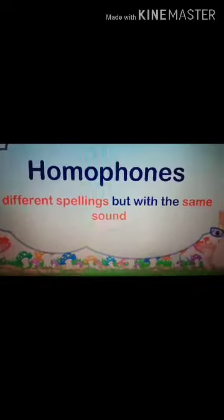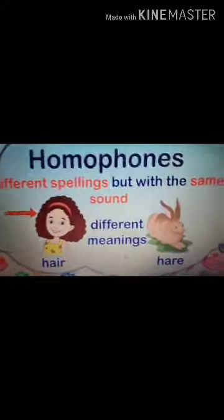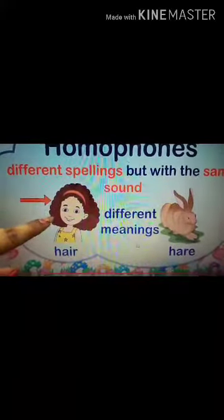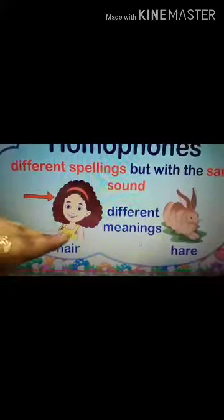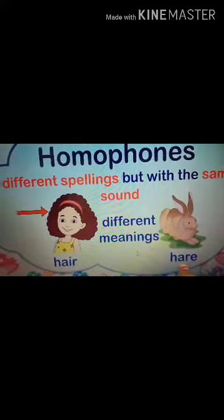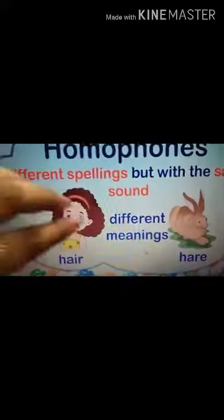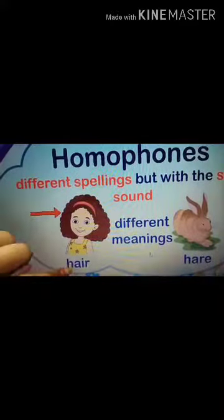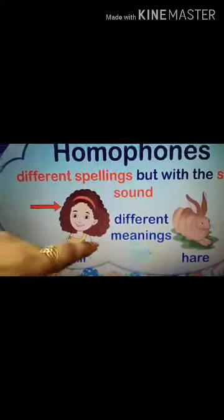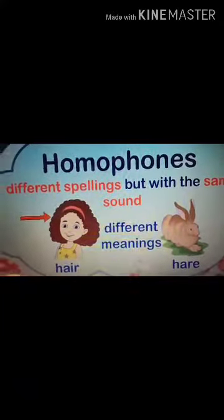Sometimes spellings are also the same, but always different in meanings. Here you can see — this is 'hair'. This girl is having short hair. And this is also pronounced like 'hair' — this is 'hare', the rabbit. These two words are having the same pronunciation, that is 'hair', but different in meanings and spellings.